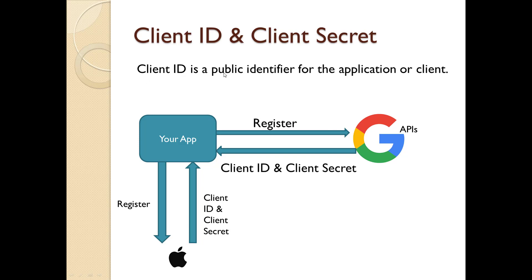The client ID is a public identifier for the application or client. Suppose your app — which might be Dropbox, CVS, or your personal app — wants to allow users to register via Google accounts. Your app needs to be registered with Google, and Google will provide the client ID and client secret. Similarly, if you want users to log in via Apple, you need to register with Apple, and Apple will provide their own separate client ID and client secret.